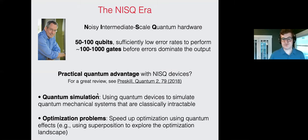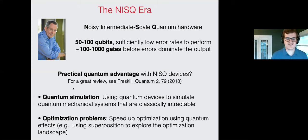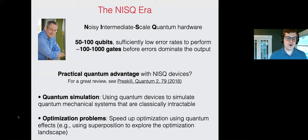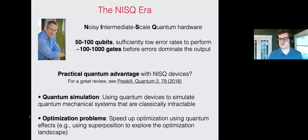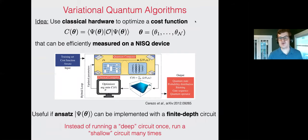The natural question to ask is whether there is any potential for practical quantum advantage with NISQ devices. Do we have to wait until we have a fully error-corrected device to do something useful that is classically intractable? The discussion typically falls into one of two categories: quantum simulation — using quantum devices to simulate quantum mechanical systems in classically intractable regimes — or optimization problems, for example using superposition to explore an optimization landscape more efficiently. One class of algorithms relevant in this setting is the class of variational quantum algorithms.